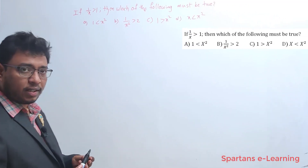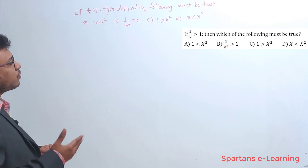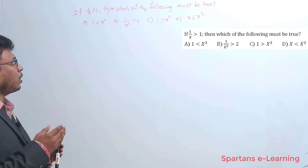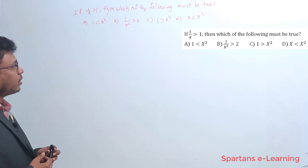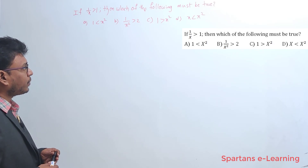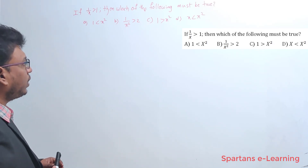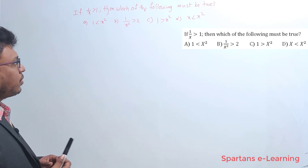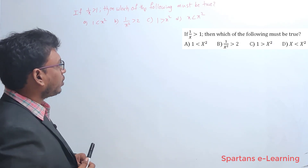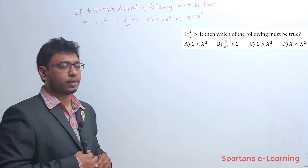Our next question says: if 1/x > 1, then which of the following must be true? The given options are: 1) 1 < x², 2) 1/x² > 2, 3) 1 > x², and 4) x < x². Try to solve this on your own, then watch the solution.